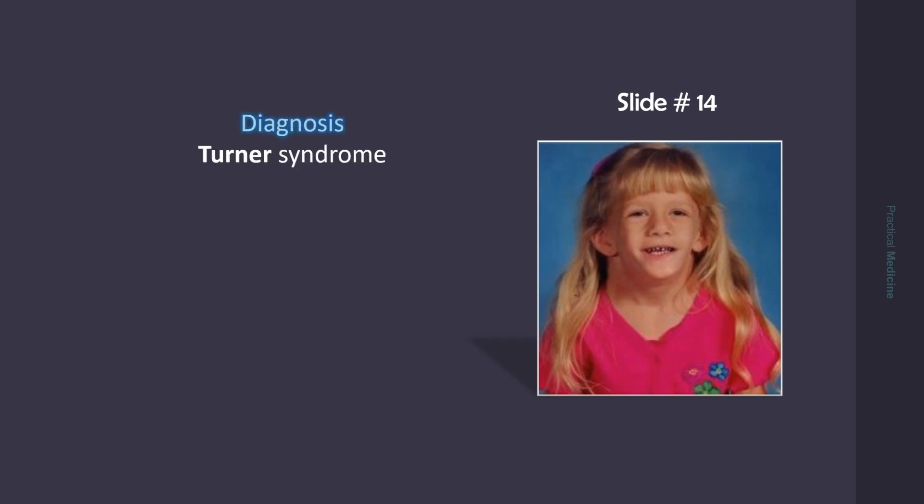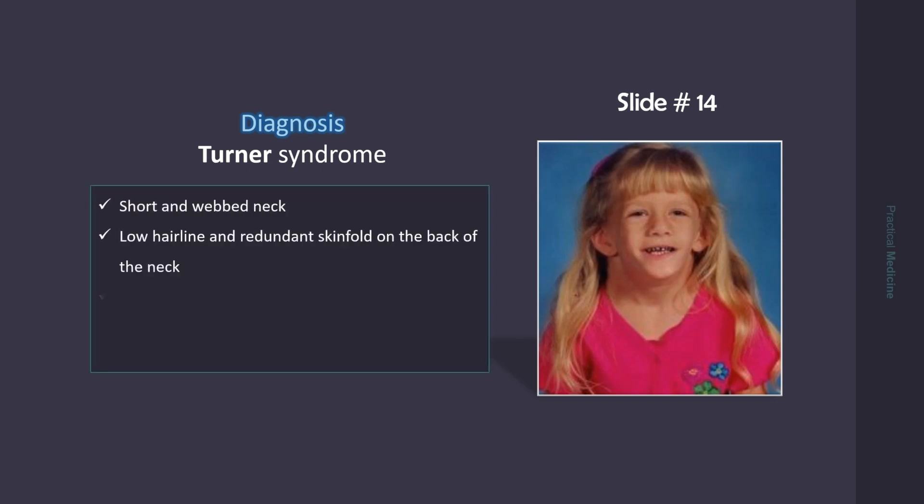This is the typical appearance in Turner Syndrome. There is short and webbed neck, low hairline and redundant skin fold on the back of the neck, small lower jaw called micrognathia. The mouth is small, and ears are low-set and deformed.